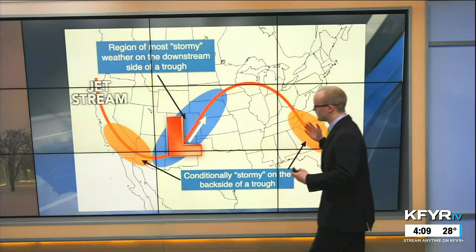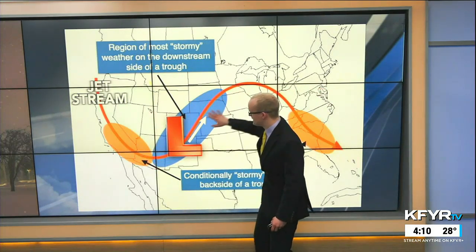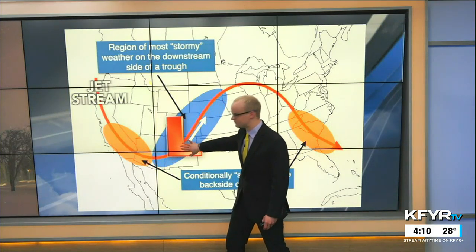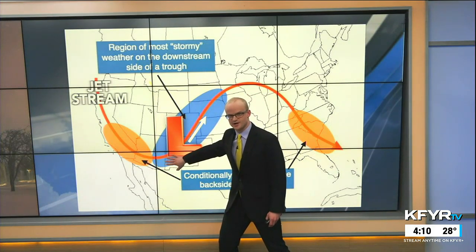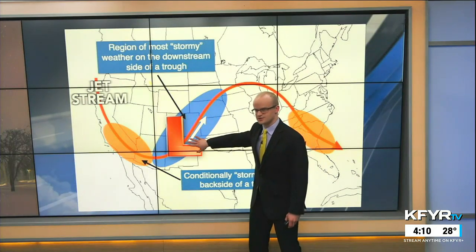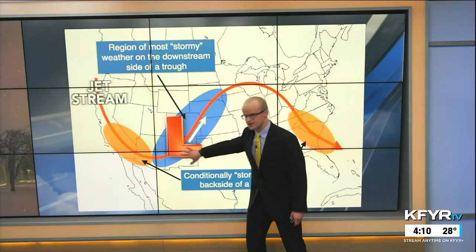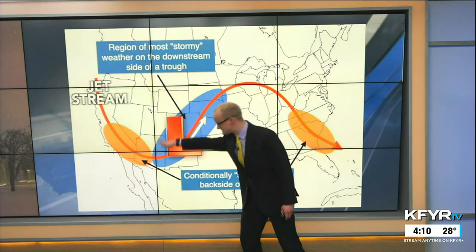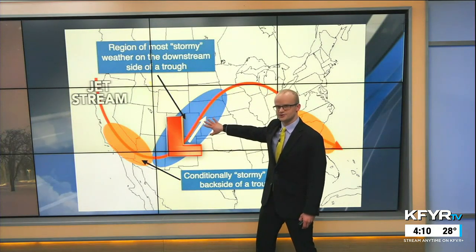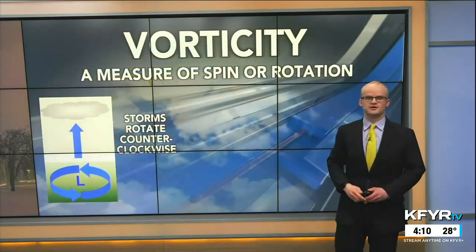Looking at a weather map across the United States, imagine this red line is our jet stream. As we move into the trough, an area of low pressure forms at the base of that trough and intensifies as it moves up towards the right side. Storm systems like to form in these troughs — these dips in the jet stream — and then intensify as they move farther north and east, whereas we have generally calmer weather in the ridges of the jet stream.